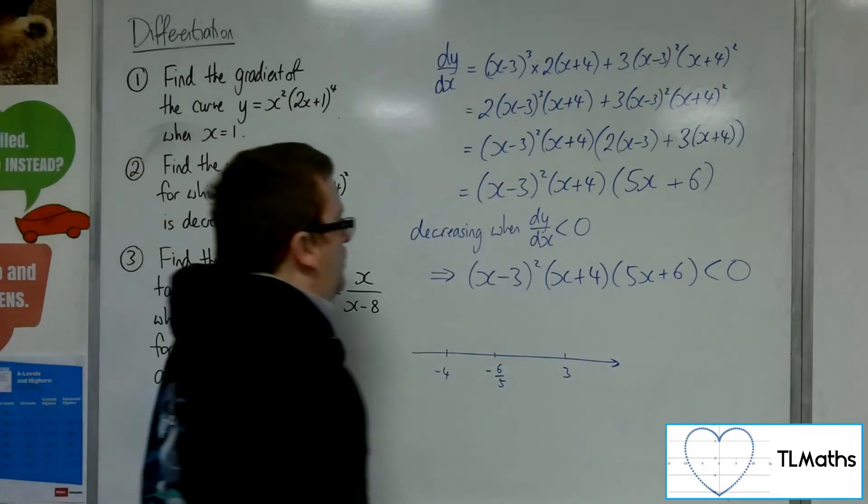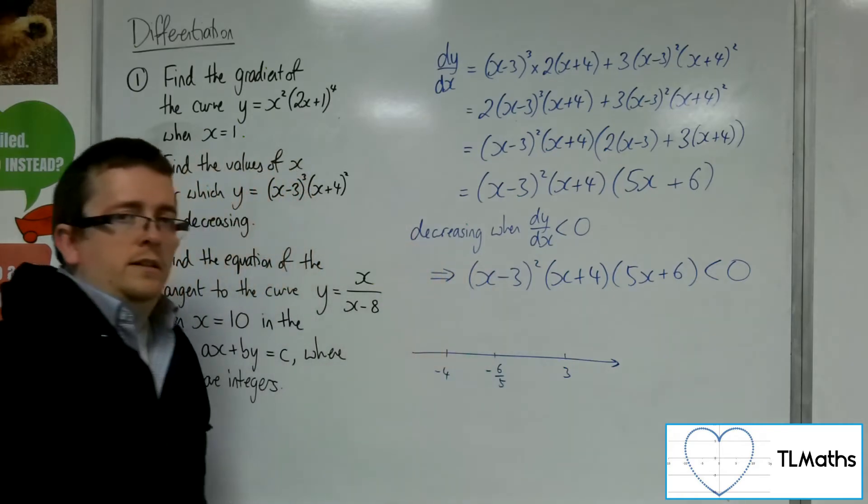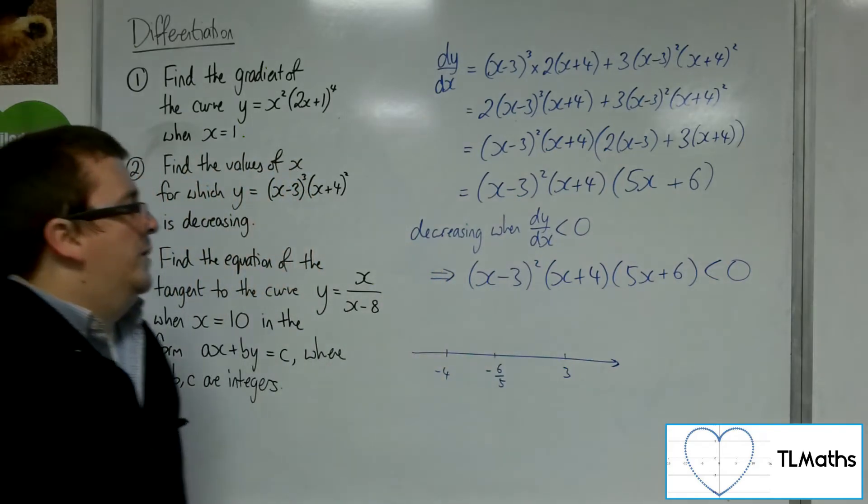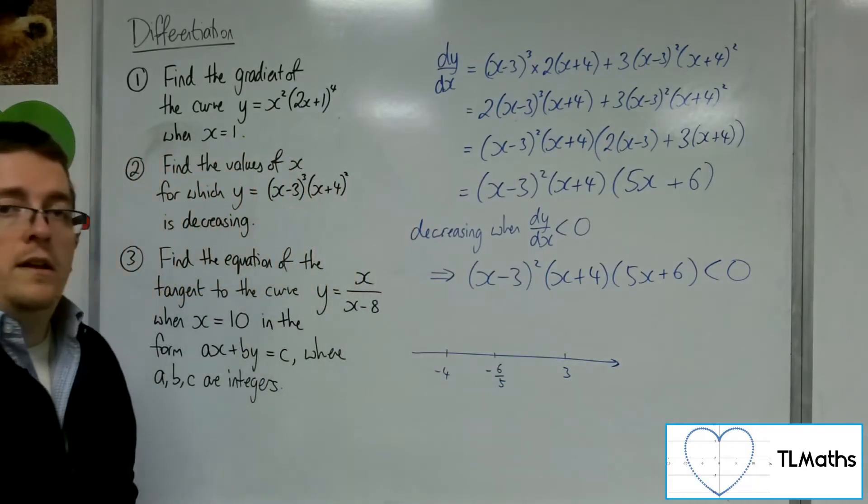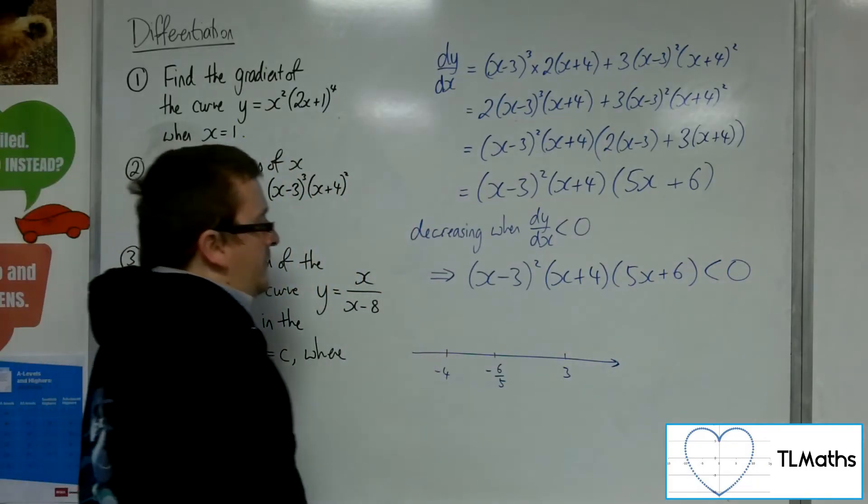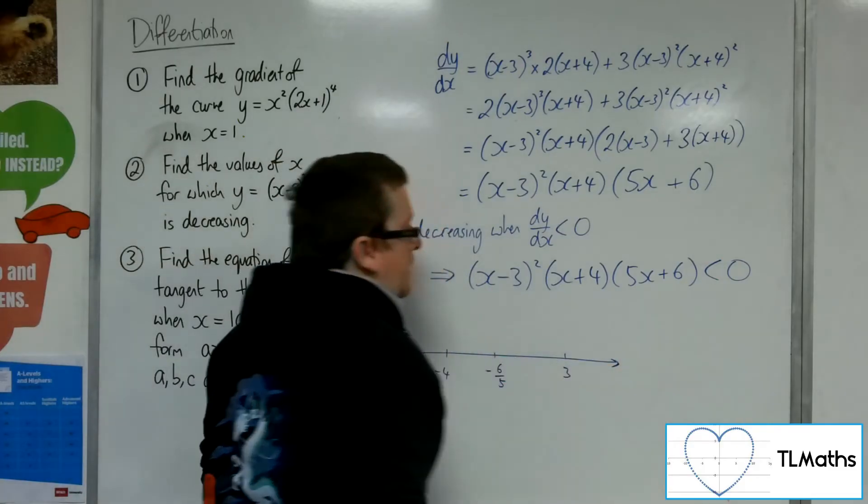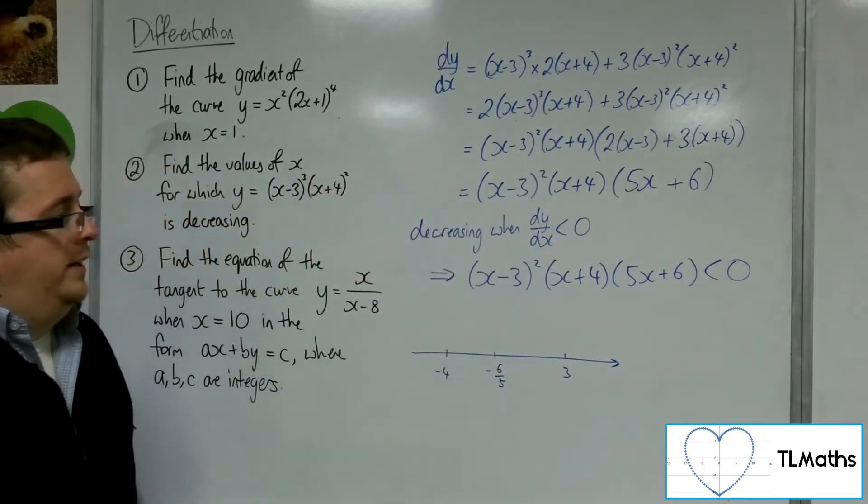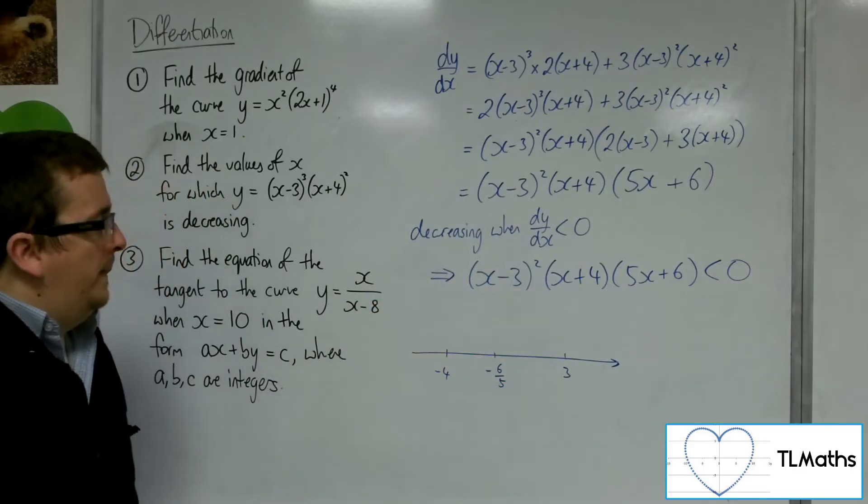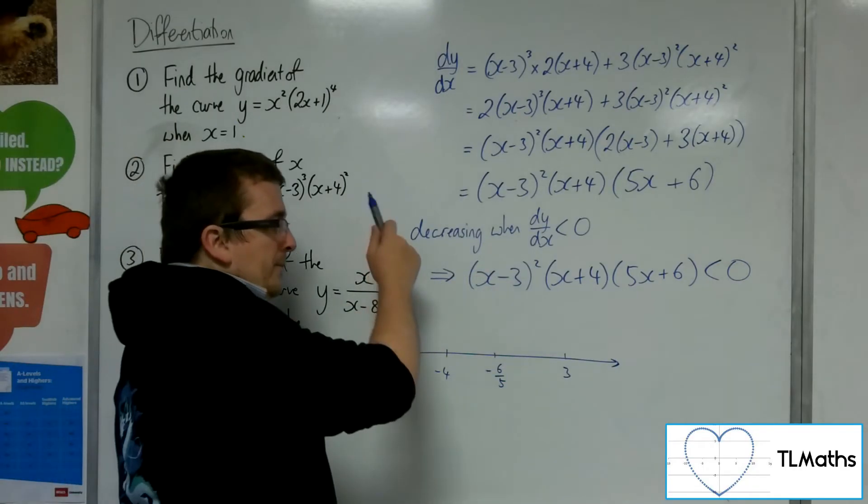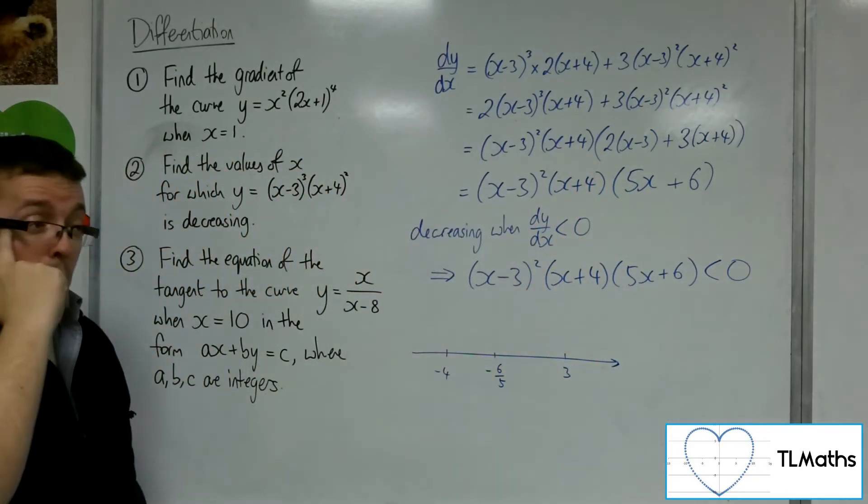Now because we've got this repeated factor at x minus 3 squared, we've got to think that maybe there's something else going on at 3, is it just brushing the curve there. Now this is a quartic. Now a quartic with a positive x to the 4, positive coefficient, would start in the top left and end up in the top right. Positive power of x. So it must start by doing this.